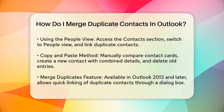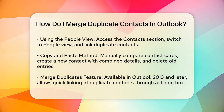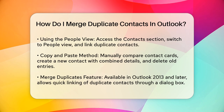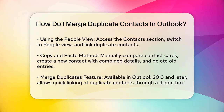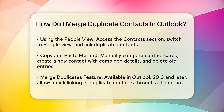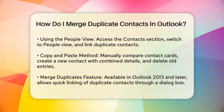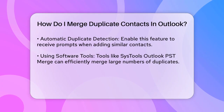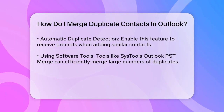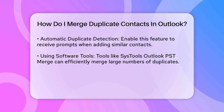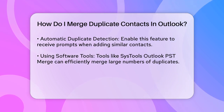Starting from Outlook 2013, you can use the built-in feature to link contacts. On the navigation bar, click on People, then in the Current View group, click on People again. Select the duplicate contact, click the three dots, and choose Link Contacts. In the dialog box, you can link or unlink contacts as needed. This feature is particularly useful for quickly merging a few identical contacts into one.